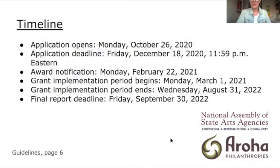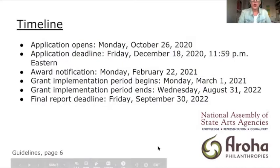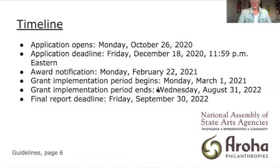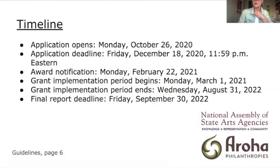A quick overview of our timeline: applications opened on Monday, October 26th. The deadline for submitting application materials is Friday, December 18th, 11:59 p.m. Eastern Time. We'll be notifying of awards by Monday, February 22nd, 2021. The implementation period for activities begins Monday, March 1st, 2021, and ends Wednesday, August 31st, 2022 — that's fully a year and a half for grant activity implementation. The final report deadline would be Friday, September 30th, 2022.